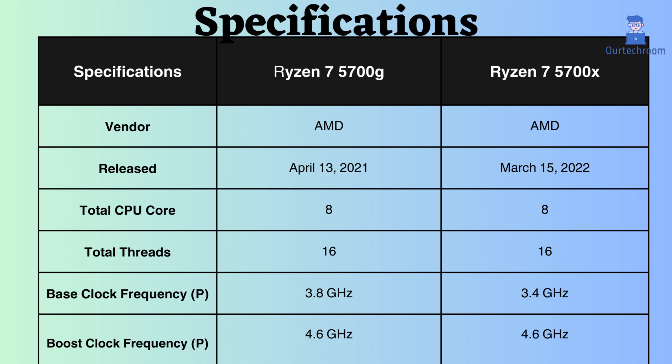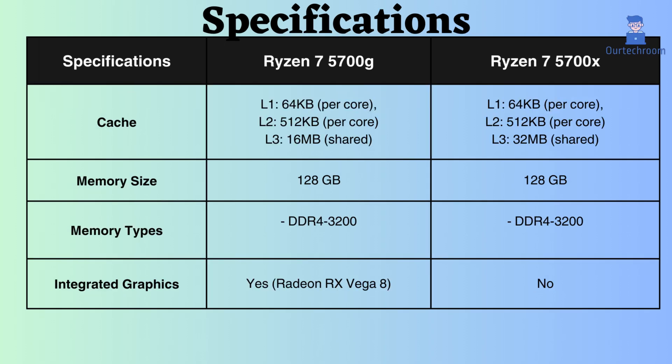The boost clock frequency for both processors is 4.6 GHz. The L1 and L2 cache for both of these processors are 64 KB and 512 KB, respectively.